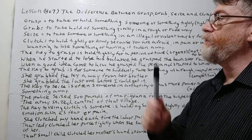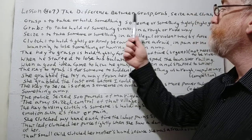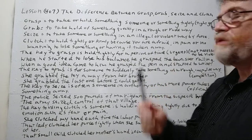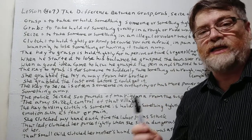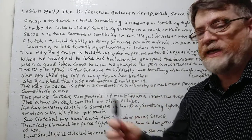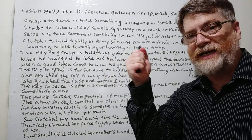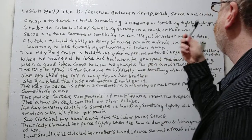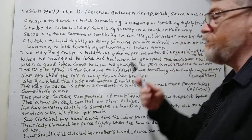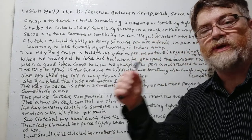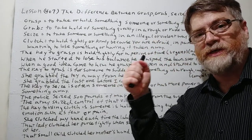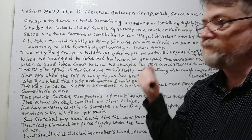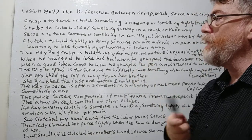Let's take a look at the first one: grasp. Grasp means to take hold of something or someone, especially tightly. So once they take it, they're holding it tight in their hand. They usually have a tight grip when you grasp something, at least for a short period of time.